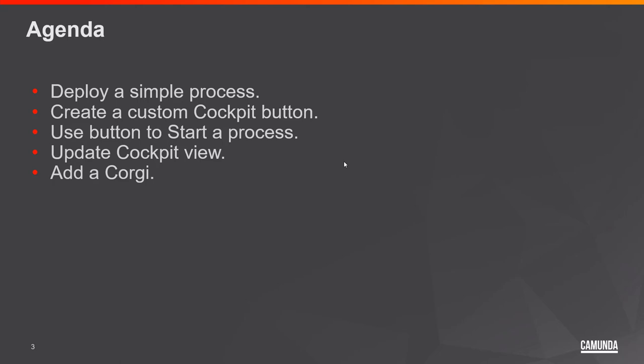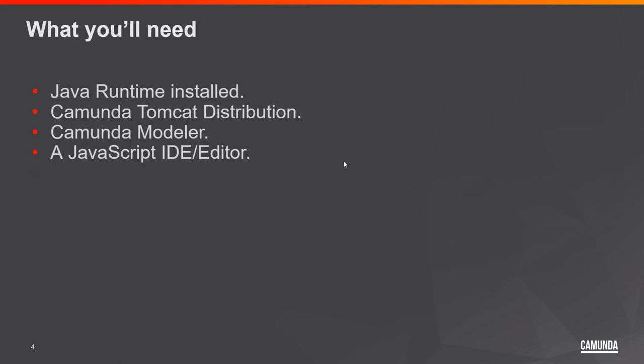To get started you'll need the Java runtime installed, the Tomcat distribution of Camunda — this tutorial will differ depending on the distribution you use — the Camunda Modeler, and a JavaScript editor, since Cockpit and our plugin are both written in JavaScript. I'll be using Visual Studio Code, but any editor you're comfortable with works fine.